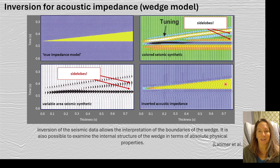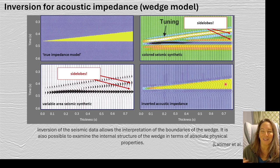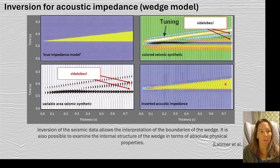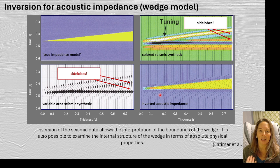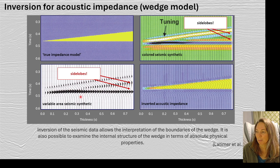We can look at this classical example of how acoustic impedance inversion is helpful using the wedge model. This demonstration is really powerful because it shows how inversion helps us tackle one of our biggest challenges: resolving thin beds. In the wedge model, thinner beds produce tuning effects. The inversion results let us not only see the boundaries of the wedge more clearly, but also see what's happening inside the wedge in terms of actual rock properties — something we can't really see in the conventional synthetic or seismic data.